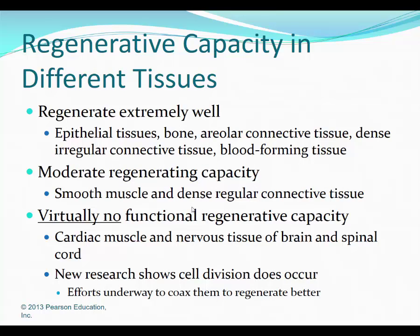When we look at the ability to regenerate: skin and epithelial tissues can repair themselves; bone, areolar tissue, dense irregular tissue, and any blood-forming tissue can replace themselves; smooth muscle and dense regular connective tissue like ligaments and tendons have a moderate ability to regenerate; and virtually none are the heart and brain. If you damage your heart muscle cells from a heart attack, those heart muscle cells can't grow back. People who have had heart attacks have reduced heart function, so we're always looking to maximize what cells are left and keep them functioning at their peak.